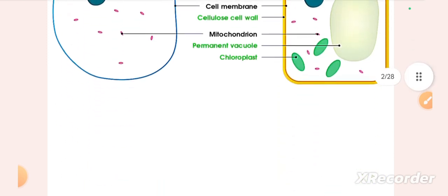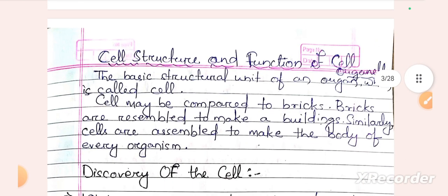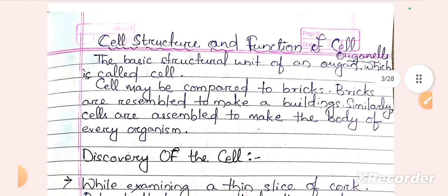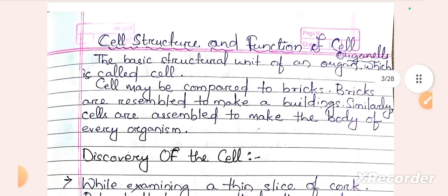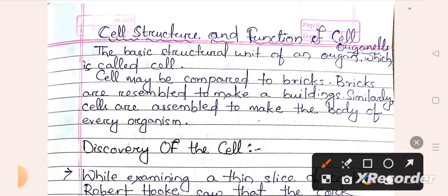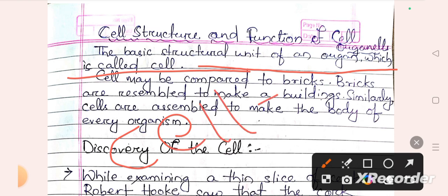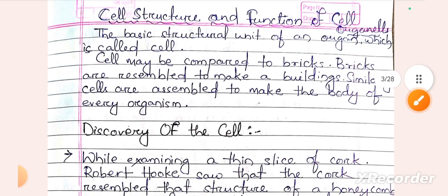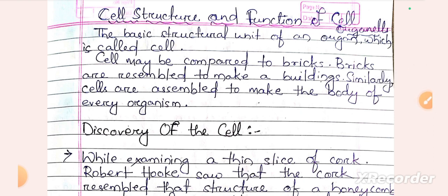Let's start with cell structure and function. The cell is the basic structural unit of an organism. Cell → tissue → organ → organ system. The cell is the basic structural unit of an organ, which is called a cell.